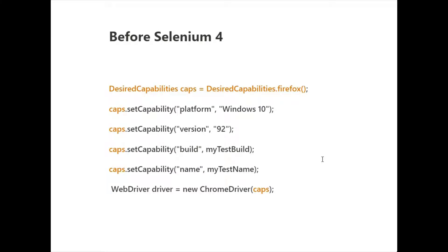Before Selenium 4, this was the syntax we were using with Desired Capabilities. At runtime, when your browser launches, whatever specification you want your browser to have, you can set that in Desired Capabilities — for example, for Firefox, you can set platform, version, and build name. You create an object of the DesiredCapabilities class, set the capabilities you want, and then pass it as an argument when initializing the WebDriver using the 'caps' parameter.